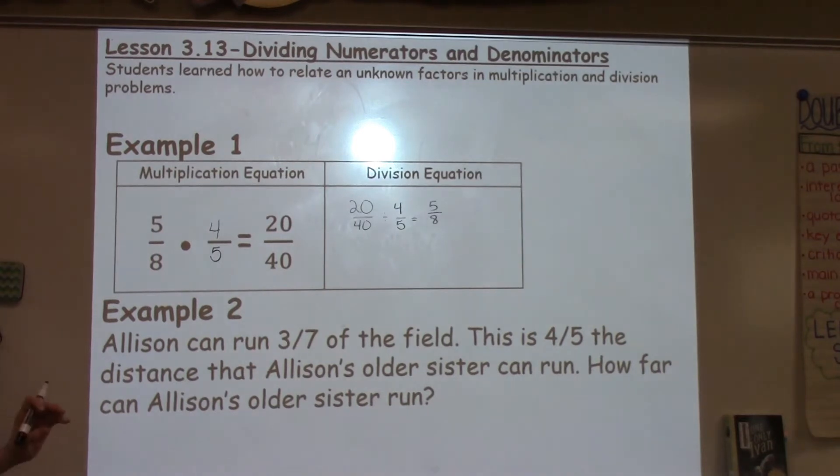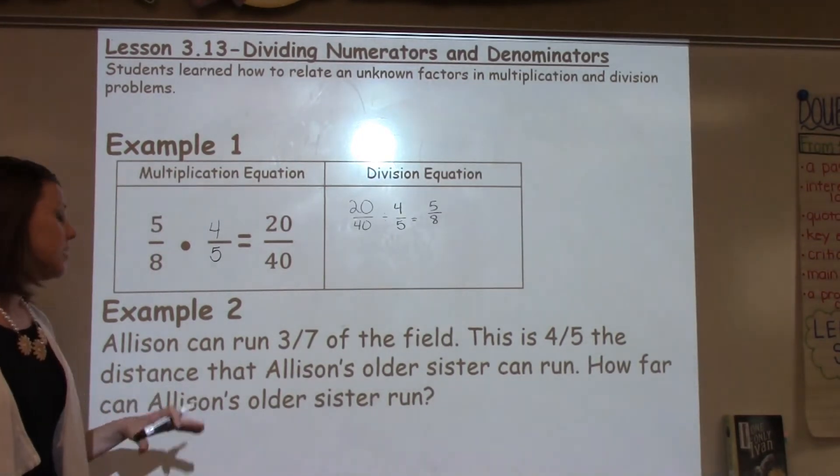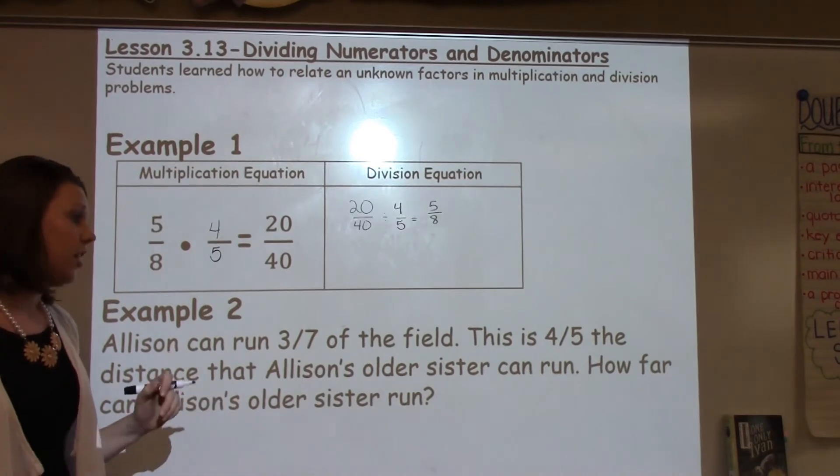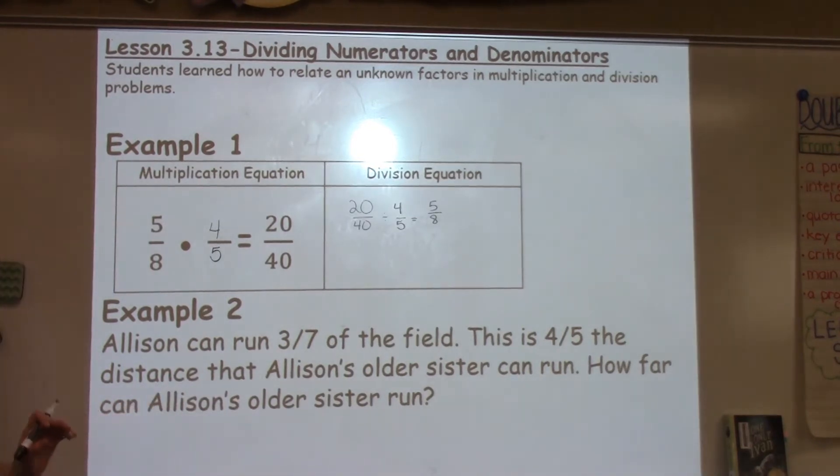Example number 2 says that Allison can run 3/7 of the field. This is 4/5 of the distance that Allison's older sister can run. How far can Allison's older sister run?